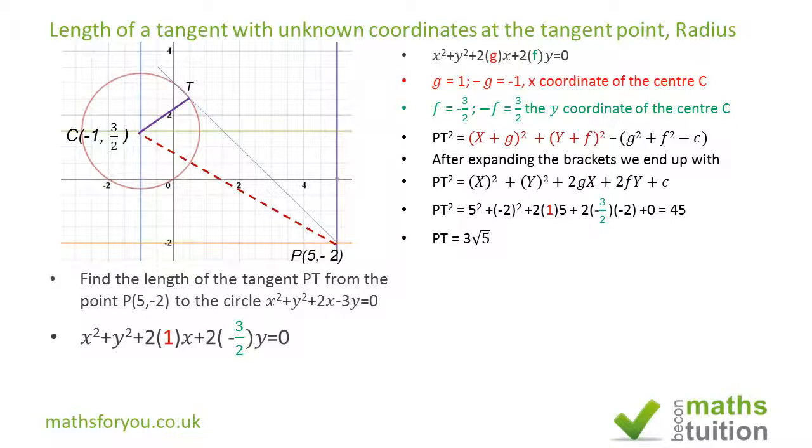As we said earlier, this bit is the radius of the circle, so CT is the square root of that. If we substitute the values of g and f into this equation, we get 1² + (-3/2)² - 0.